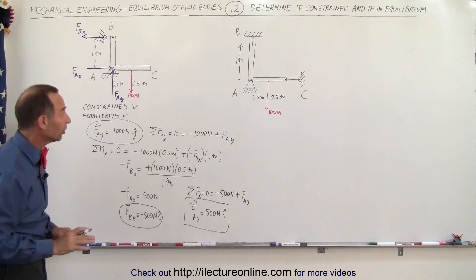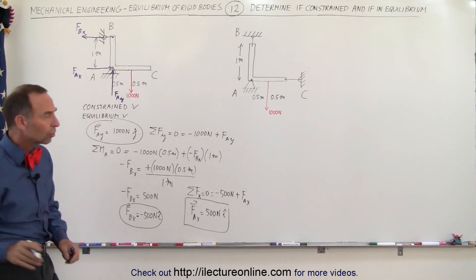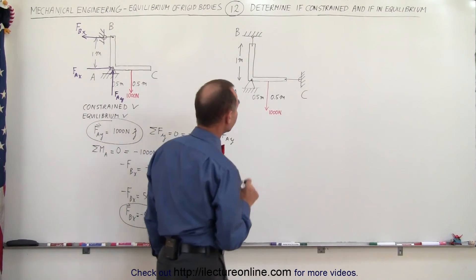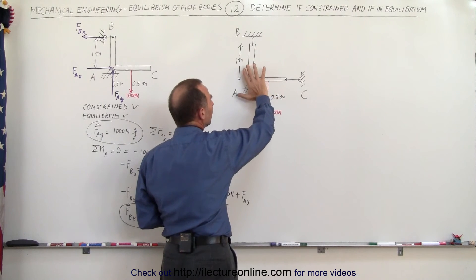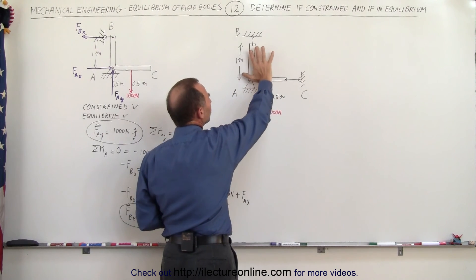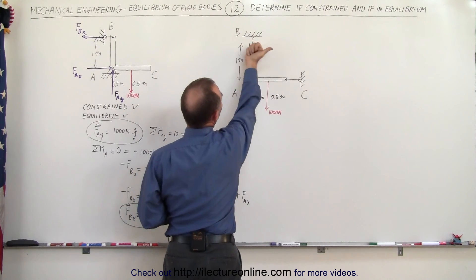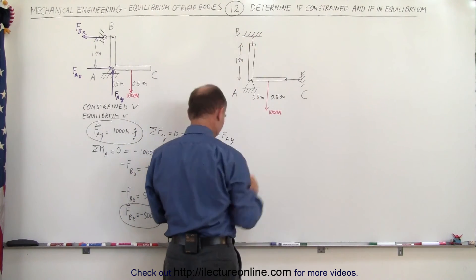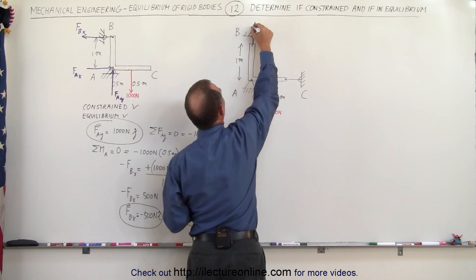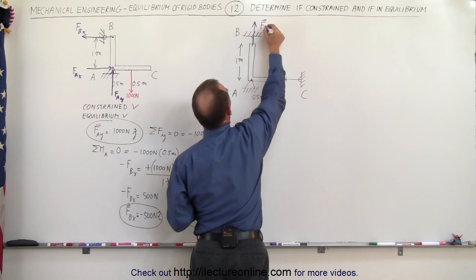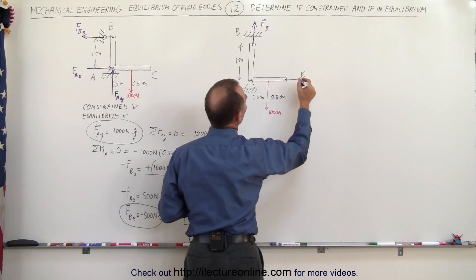Now let's go to our second example. Notice that this force would cause a moment about point A, causing the whole thing to rotate. There's nothing here to constrain it from going that direction — the force here only acts in the vertical direction, which is F at B.